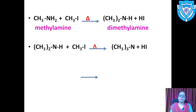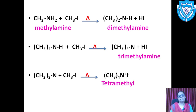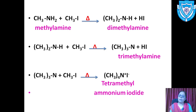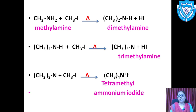In the last step, the tertiary amine reacts with another molecule of methyl iodide to give a quaternary ammonium salt. Since four methyl groups are present on nitrogen, it is called tetramethyl ammonium salt. All hydrogen atoms attached to nitrogen in NH₄⁺ are replaced by methyl groups, giving tetraalkyl ammonium iodide.